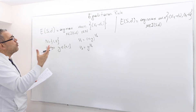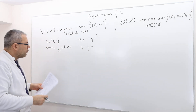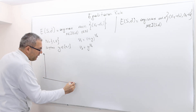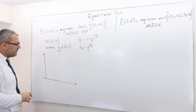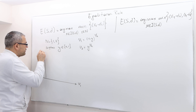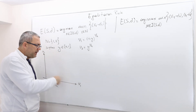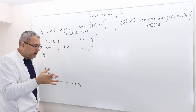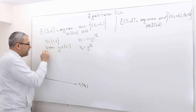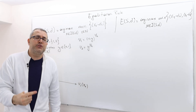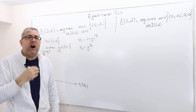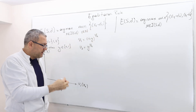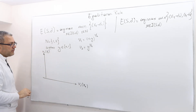We first need to draw the feasible payoff set, or bargaining set. The axes are u1 versus u2 — the utilities of each player. Note that x_i here refers to the utility level player i receives, not how much surplus they get. Be careful about that distinction.